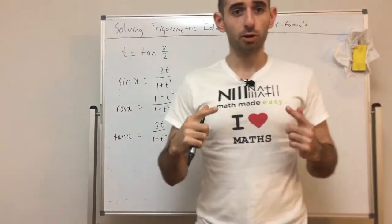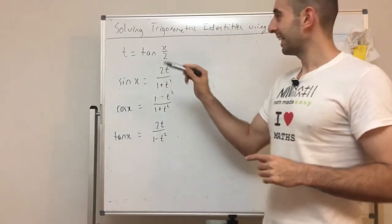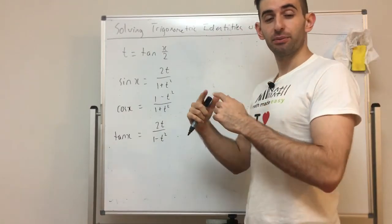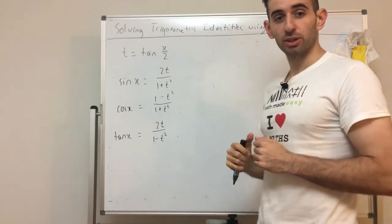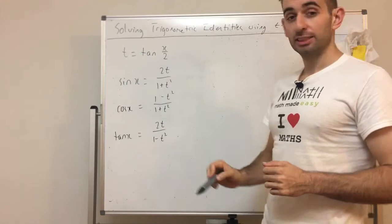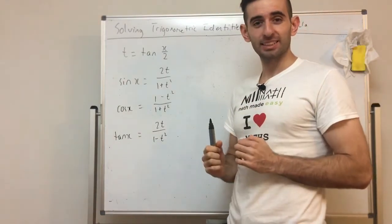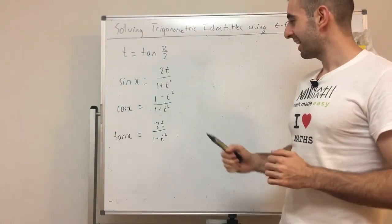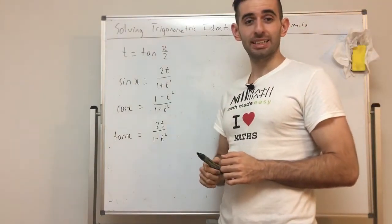So what are the T formula? Well it's based on letting t equal tan x on 2 and if we do that then we get different identities for sine, cos, and tan x. So sine x is 2t on 1 plus t squared, cos x is 1 minus t squared on 1 plus t squared, and tan x equals 2t on 1 minus t squared.